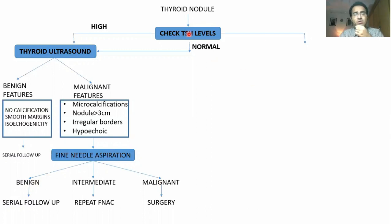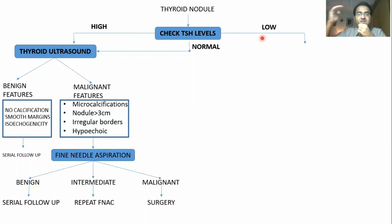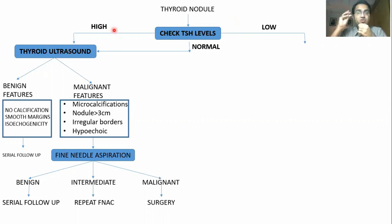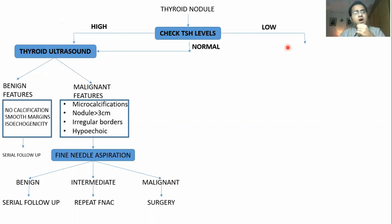Now if TSH levels are low — what conditions cause low TSH? It means thyroid hormones are in excess, and those excess thyroid hormones are suppressing TSH. Therefore TSH is low. If TSH is low, it means it is a hyper-functioning nodule — a mass which is producing thyroid hormones. Whenever there is a hyper-functioning mass, our level of suspicion is low, unlike the non-functioning mass where suspicion goes up.